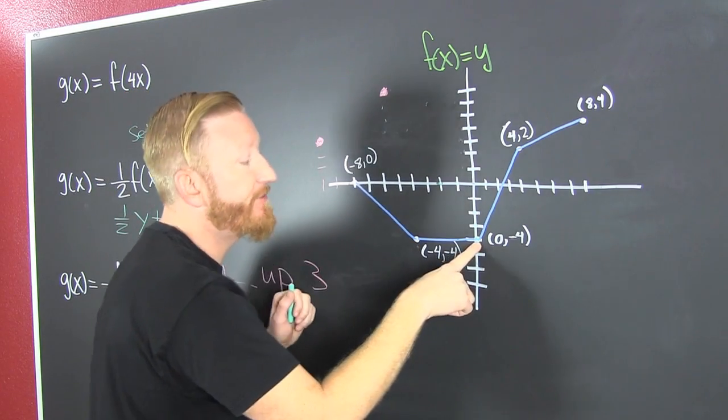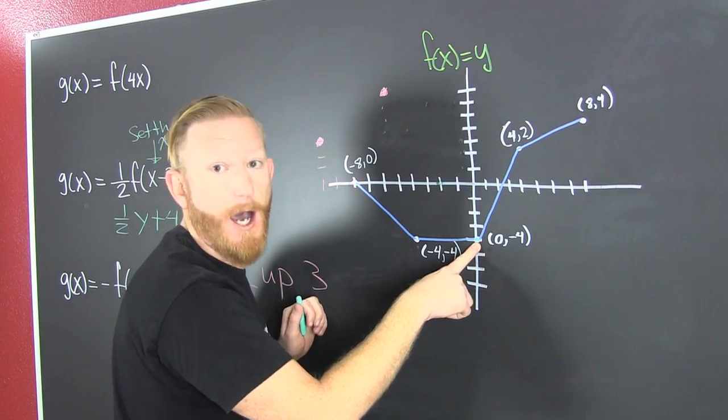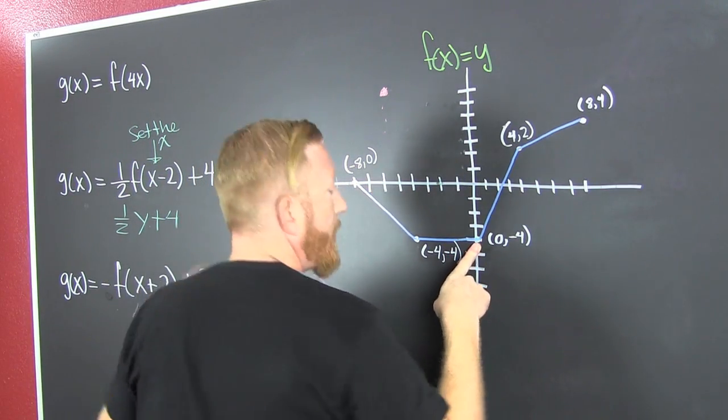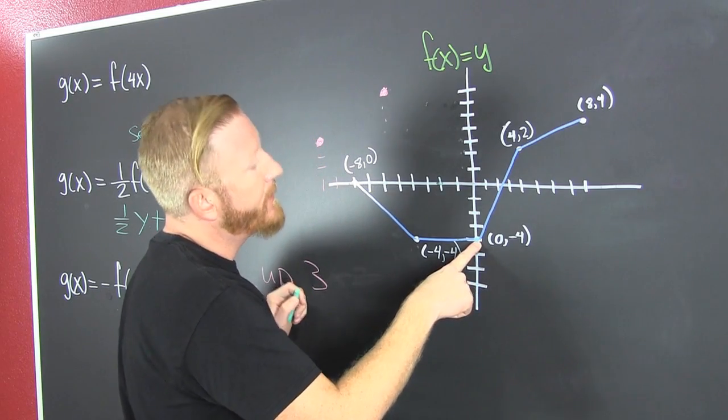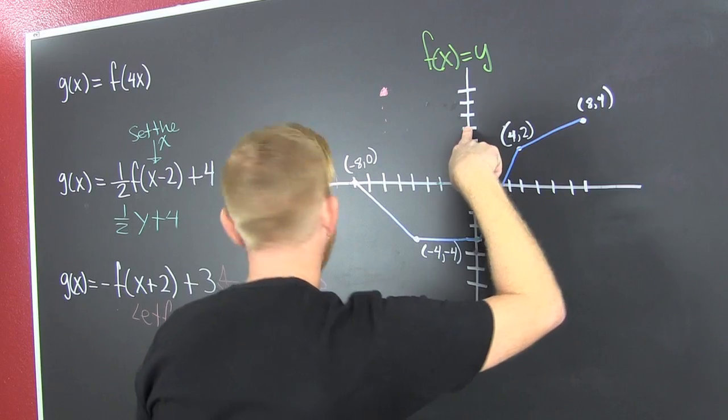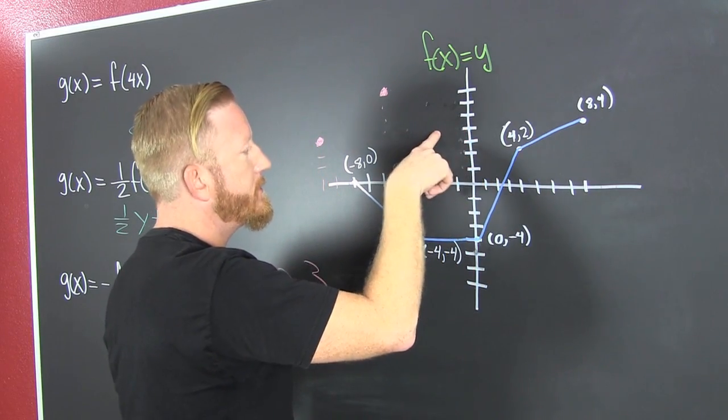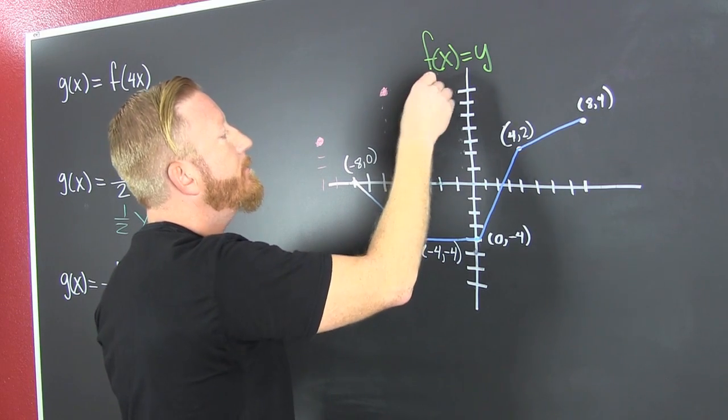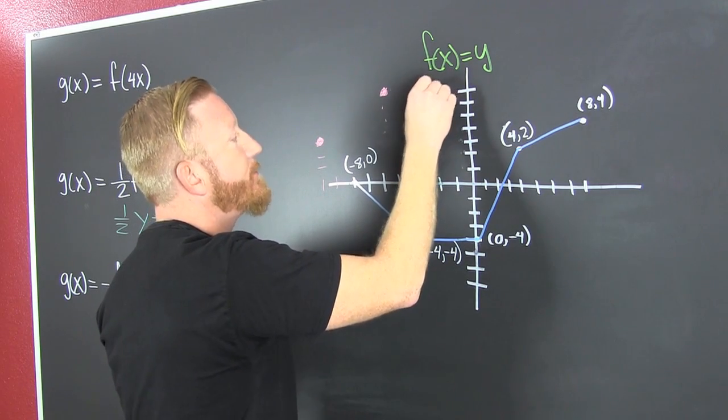Then this one. We flip it across the x-axis because it's the opposite of y. That's what the minus does over there. It takes the opposite of y. So we take the opposite of y. That's going to be four. And then we shift that left two and then we shift that up three. And that's our next point.